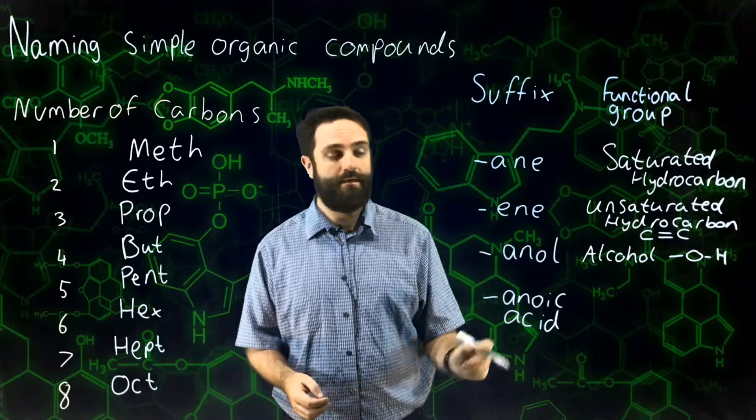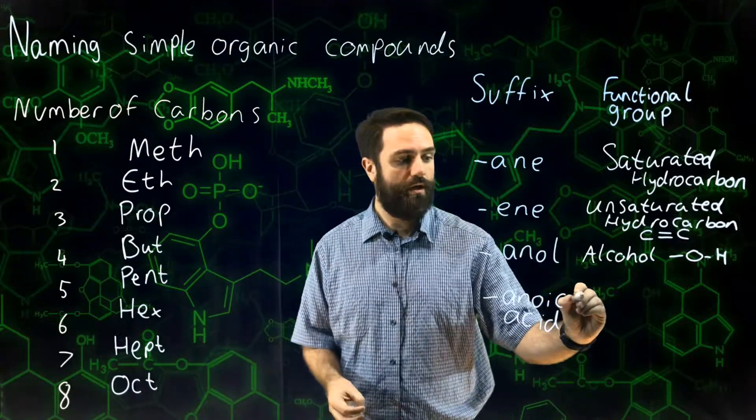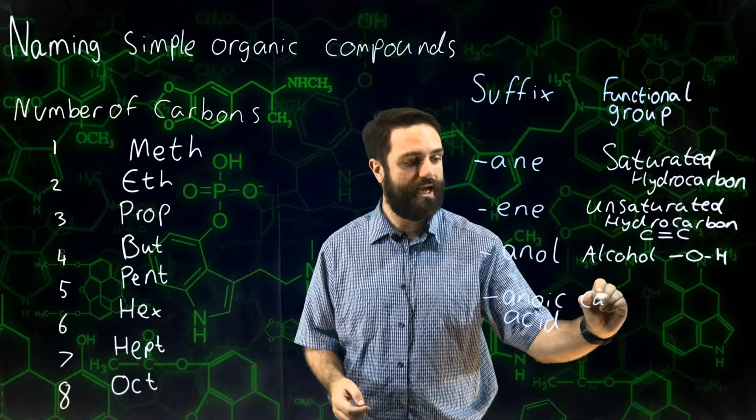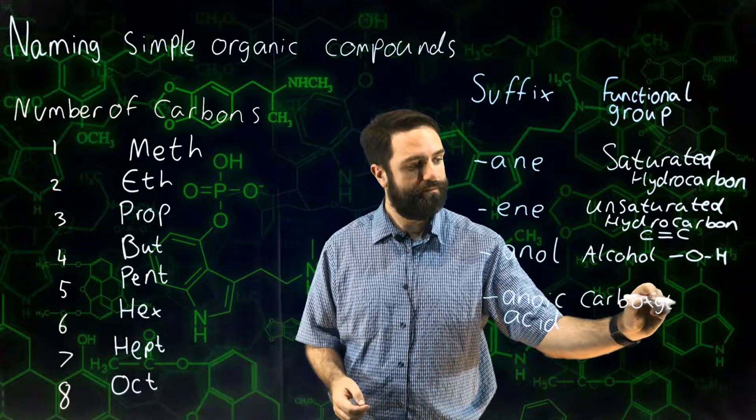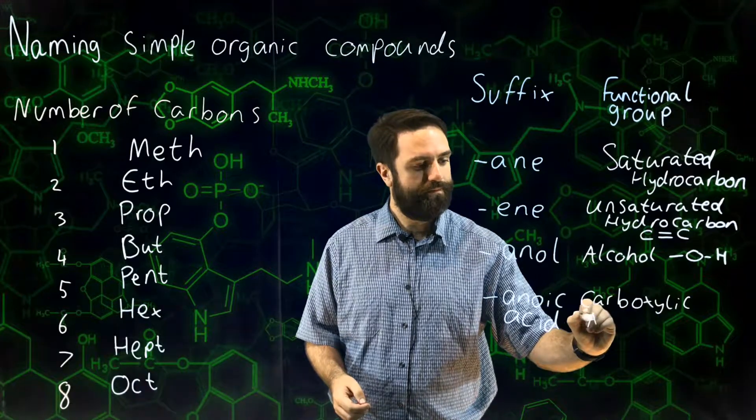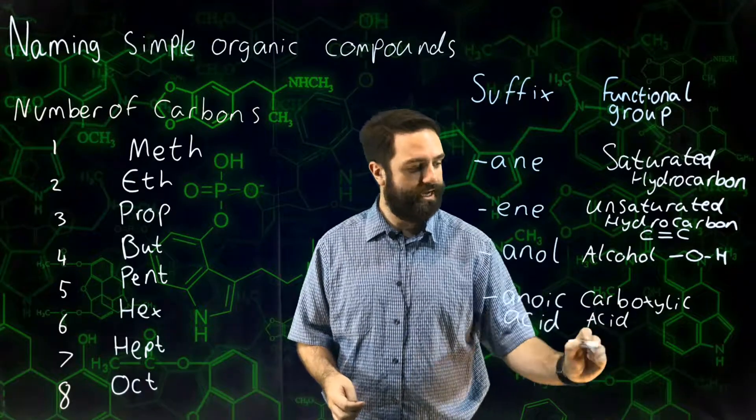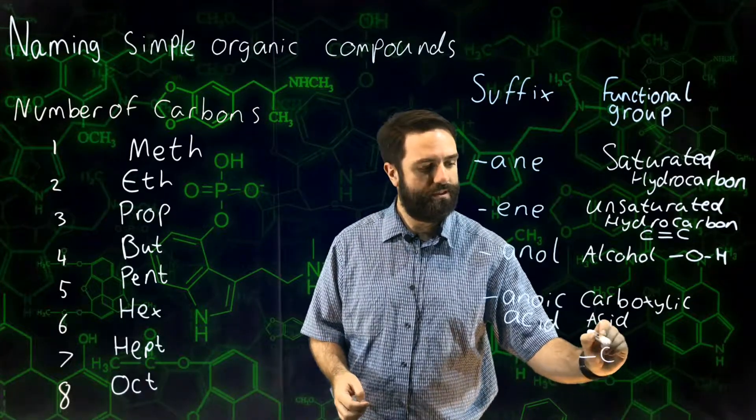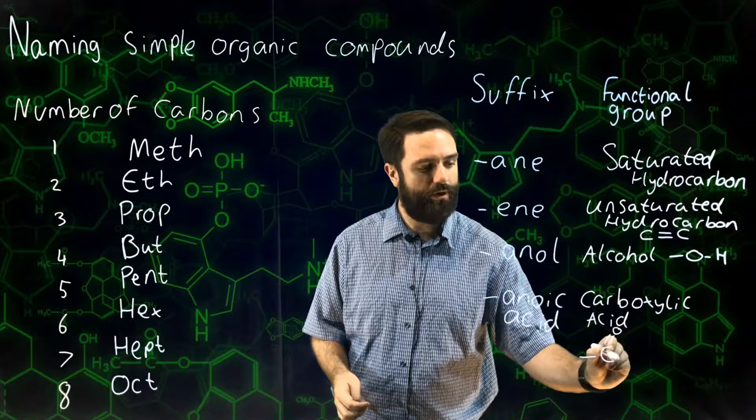Anoic acid tells you that you are looking at the carboxylic acid family, which contains the functional group C with a double bond OH.